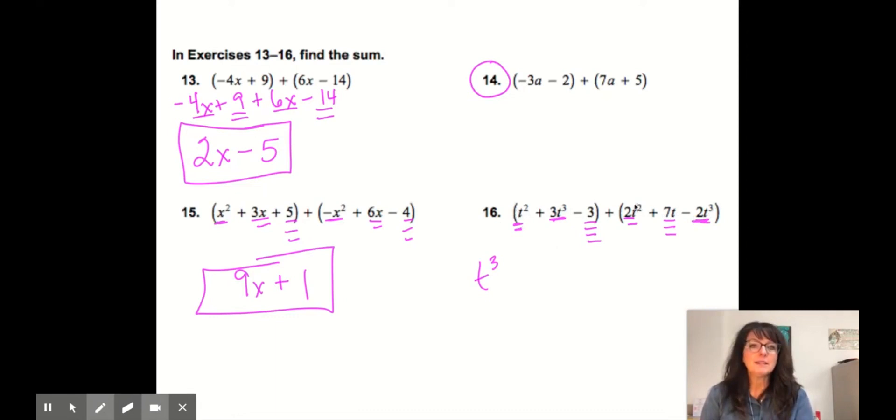Then we'll go to the squared. We have 1 plus 2. So we'll have 3t squared. Then we have this t, that's our third one. So plus, so descending order of the variable and there was nothing to add to it. So it's okay. And then minus 3. So t cubed plus 3t squared plus 7t minus 3.